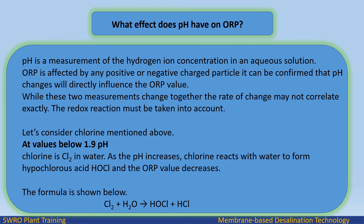pH is a measurement of the hydrogen ion concentration in an aqueous solution. ORP is affected by any positive or negative charged particle, and it can be confirmed that pH changes will directly influence the ORP value. While these two measurements change together, the rate of change may not correlate exactly. The redox reaction must be taken into account.